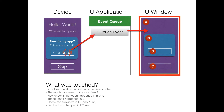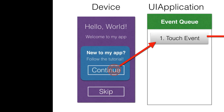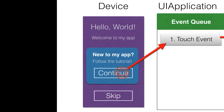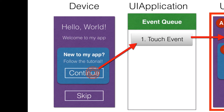Here I have an example of an application running on a device — it could be an iPhone or iPad. It says 'Hello World, welcome to my app,' with a view showing text like 'new to my app, follow the tutorial.' You can click the Continue button to go to the tutorial or click Skip to go to the application. When the user clicks Continue, that tap is a user event, and the device sends that tap to the UIApplication.